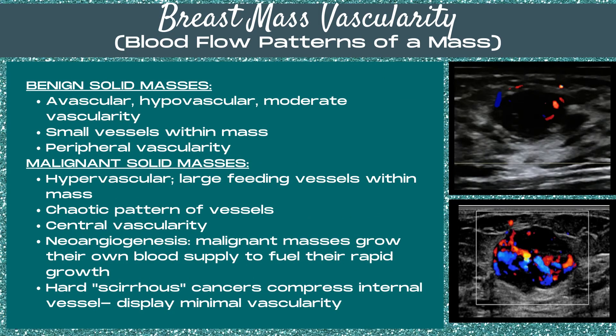With benign solid masses, they tend to be avascular, hypovascular, or have moderate vascularity, with small vessels within the mass and peripheral vascularity. Malignant solid masses are hypervascular with large feeding vessels within the mass, and there's a chaotic pattern of vessels with central vascularity.